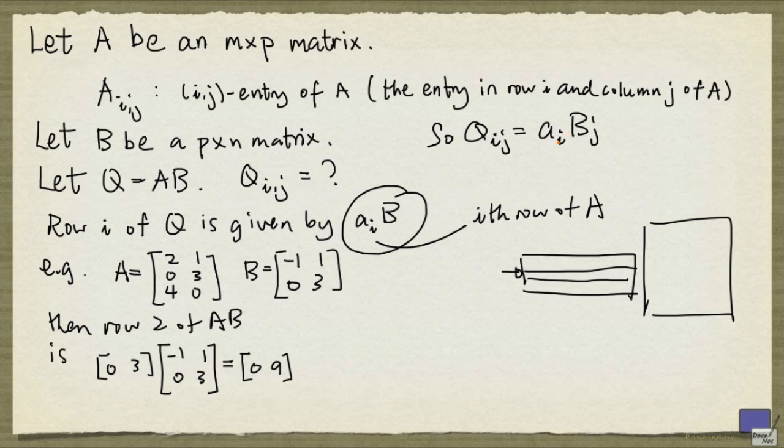And if you write this out in terms of entries of A and B, you get A_i1 times B_1j plus A_i2 times B_2j, and so on, up to A_ip times B_pj.